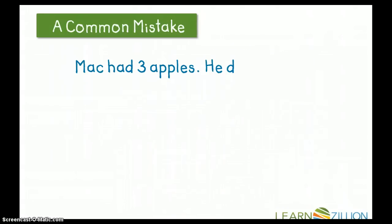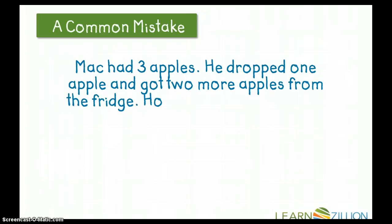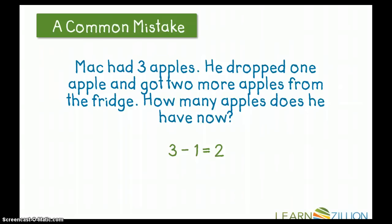A common mistake that many students make is not reading the entire problem. Here's the same problem, but now notice I'm just writing a number sentence like this one. I see three, and he dropped one, so three minus one is two. But that's incorrect, because I didn't read the part where he got two more apples from the fridge. So if my answer was two, I would be incorrect.